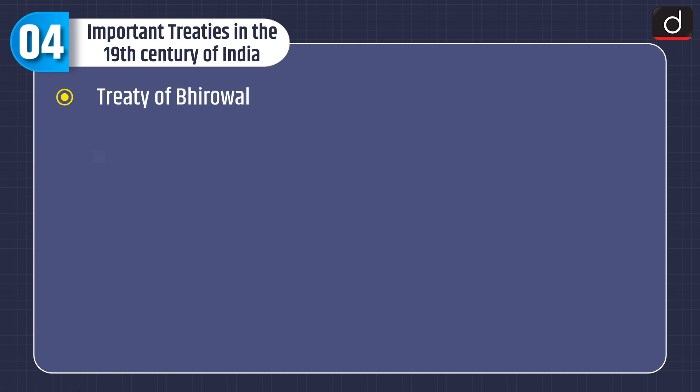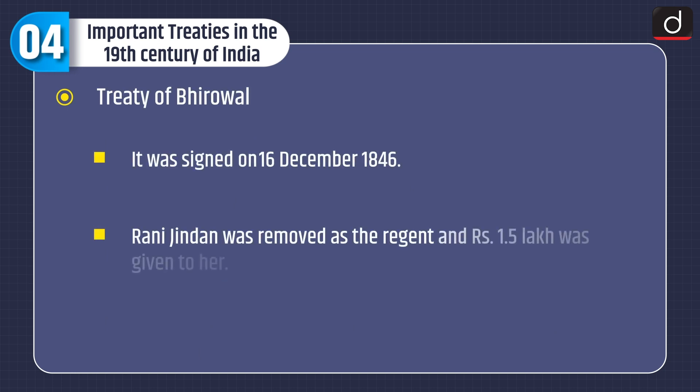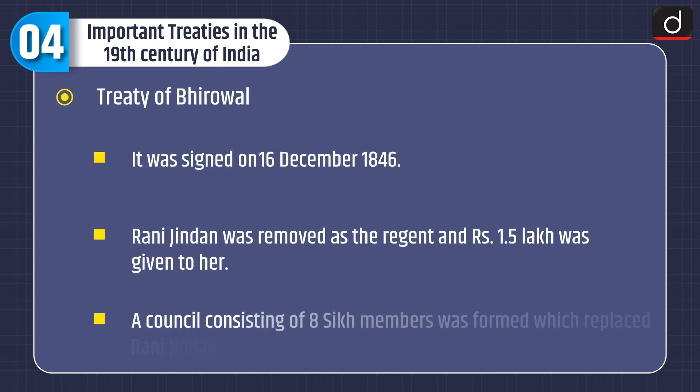And lastly, the Treaty of Bhirowal. It was signed on 16 December 1846. Rani Jindan was removed as the regent and Rs. 1.5 lakh was given to her. A council consisting of 8 members was formed, which replaced Rani Jindan.